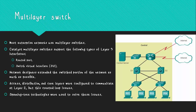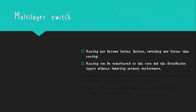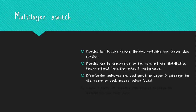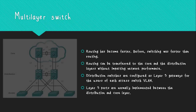That is why spanning-tree technologies were used to solve these issues. The spanning-tree protocol allowed network design to include redundant links to provide automatic backup paths if an active link fails, without the danger of bridge loops or the need for manually enabling or disabling backup links. However, routing has now become faster, and routers can be moved to the core and distribution layers without impacting network performance. Distribution switches are configured as Layer 3 gateways for users of each access switch VLAN, and Layer 3 ports are normally implemented between the distribution and core layers.